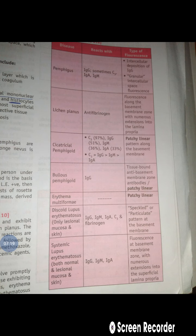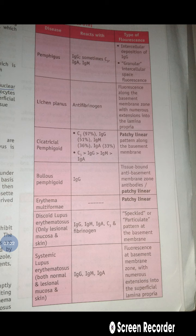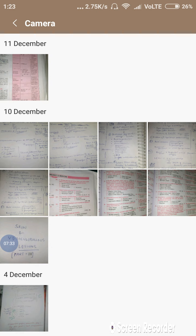Question 28 asks about patchy linear immunofluorescence at the basement membrane. From the table, cicatricial pemphigoid and bullous pemphigoid both show patchy linear distribution, and erythema multiforme also shows patchy linear distribution. Since erythema multiforme is not present in the options, the answer is option C — pemphigoid.